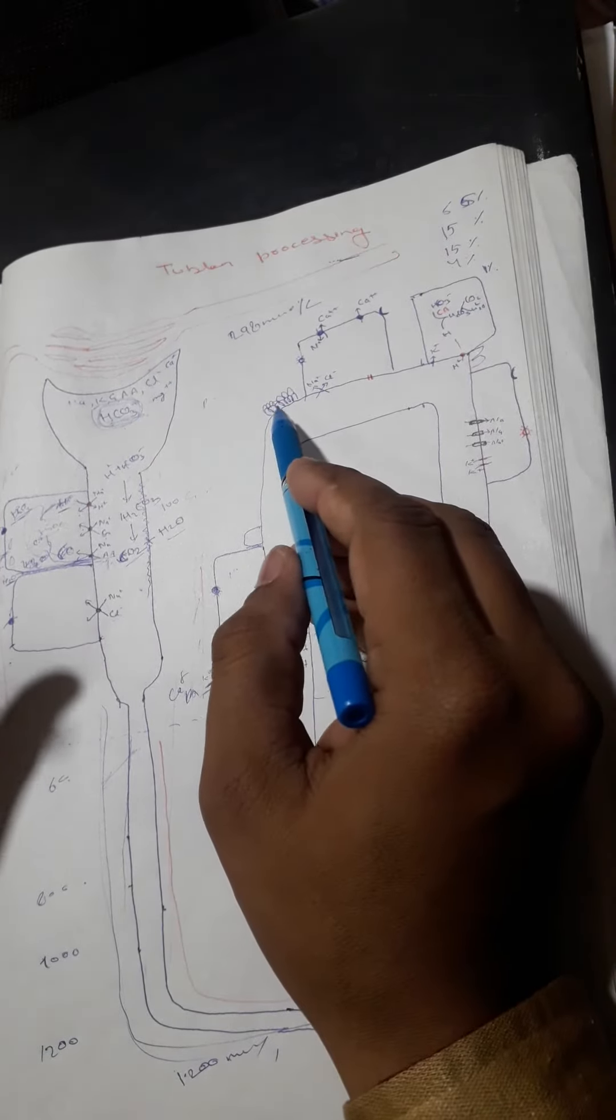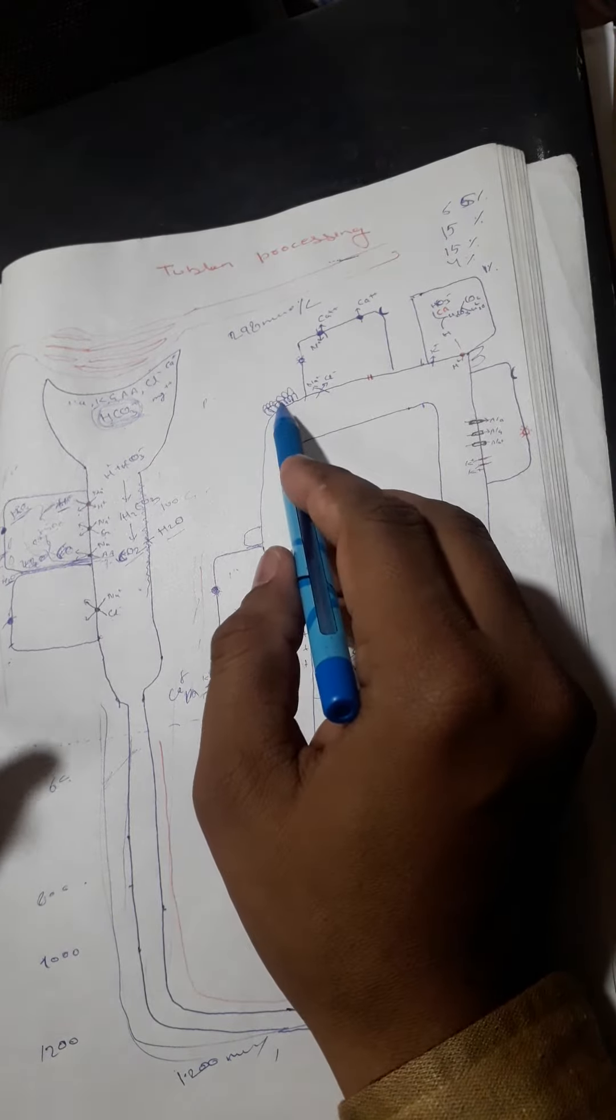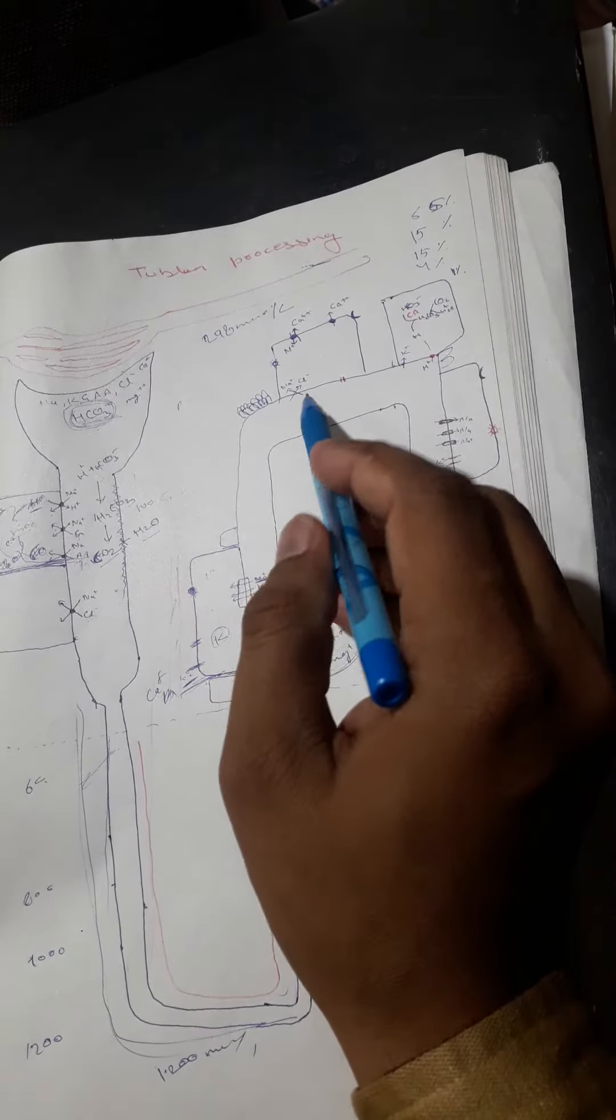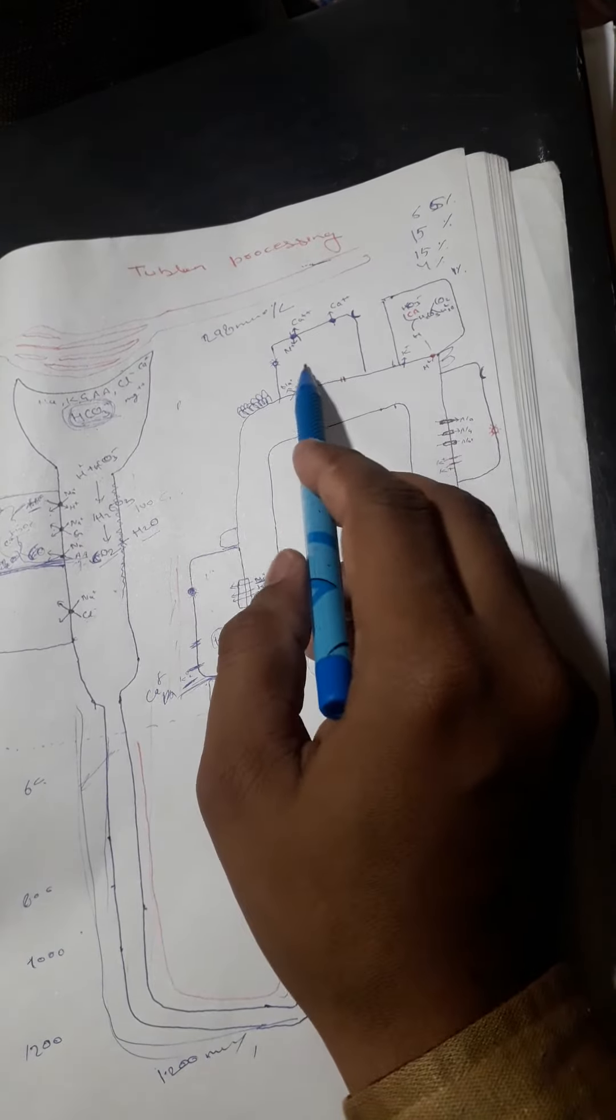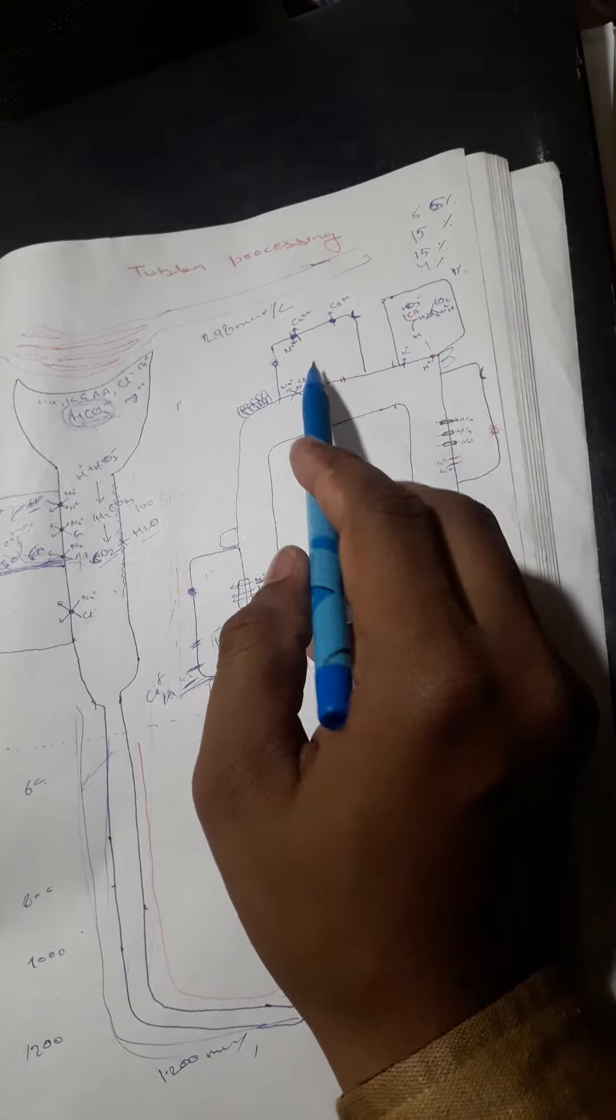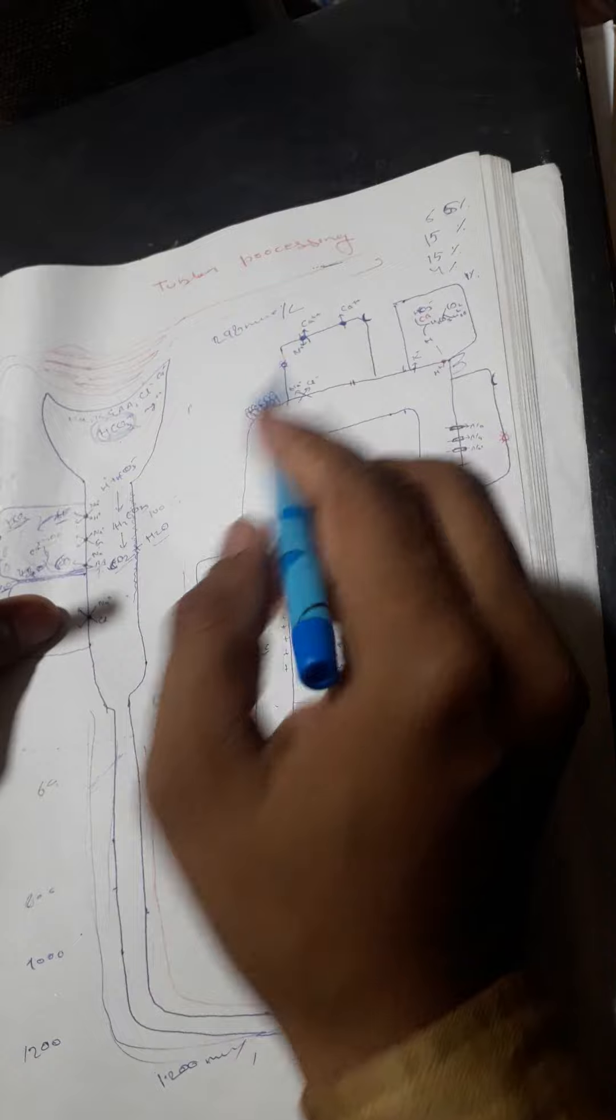Macula densa is present in the early part of the DCT. We will talk about that later. This is the cell present in the early part of DCT. What is the function of this cell here? This cell has calcium channels only, and a sodium calcium exchanger.